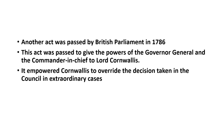In 1786, another act was passed by the British Parliament to make Lord Cornwallis both Governor-General and Commander-in-Chief at the same time. In addition, this act of 1786 empowered Cornwallis to override the majority decisions taken in the Council in cases of extraordinary circumstances.